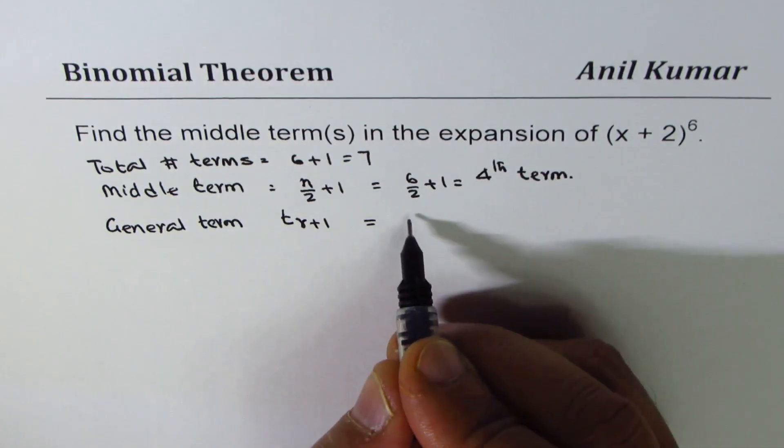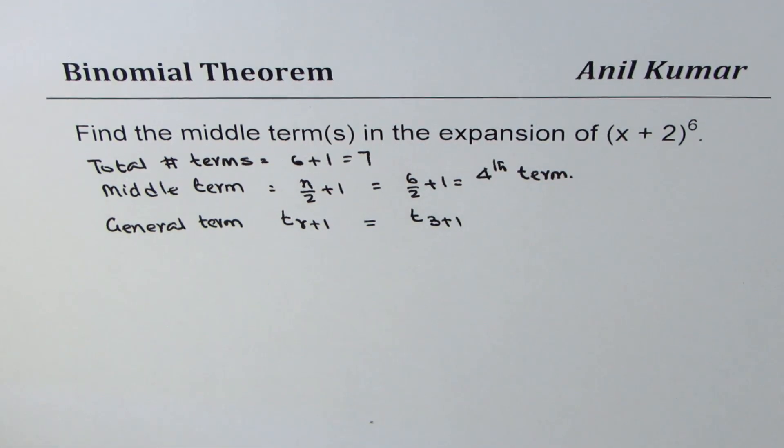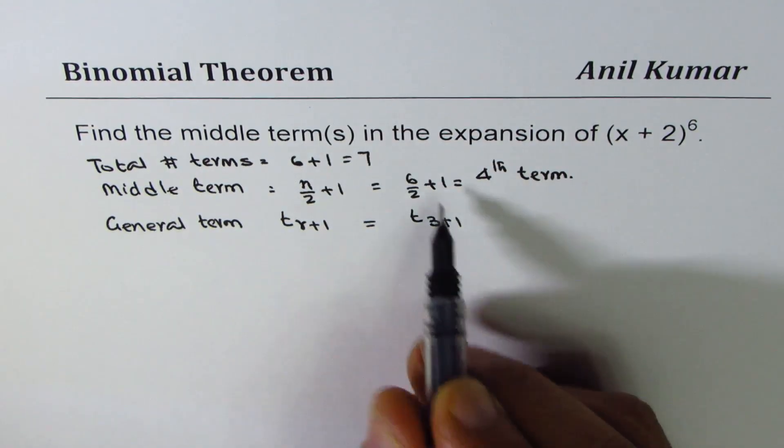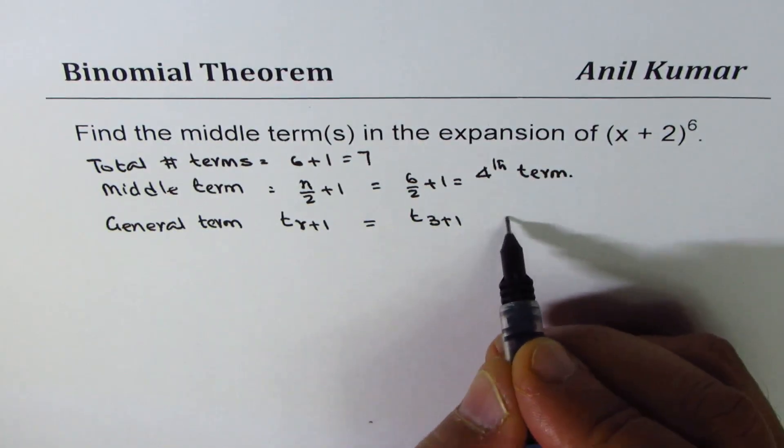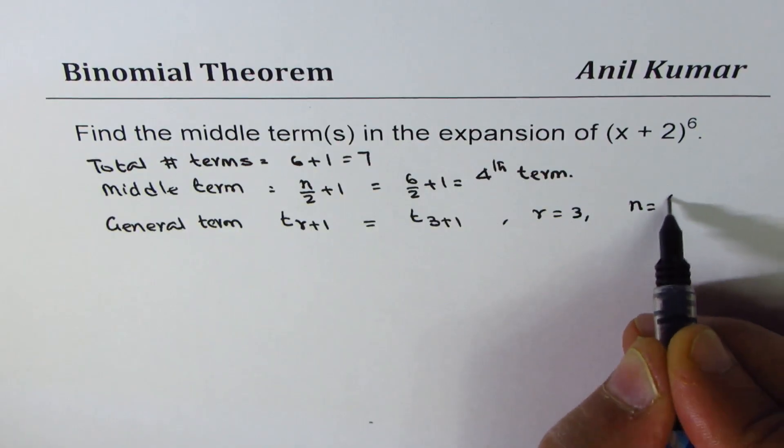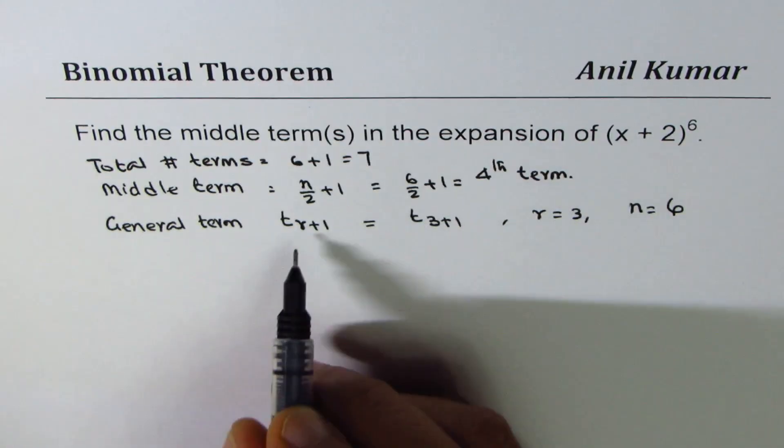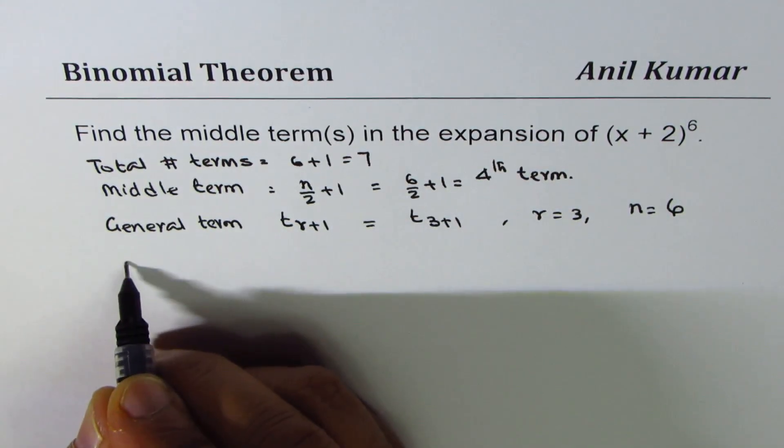So that gives us the fourth term. So r value is 3 for us. In our case we have r equals 3 and n is equal to 6. We need to find the middle term which is T_r+1.